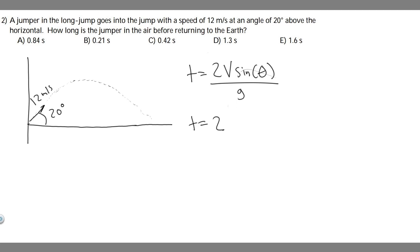So 12 meters per second times the sine of theta. Theta in this case is just going to be the angle at which they jump at. So in this case, it's 20 degrees.